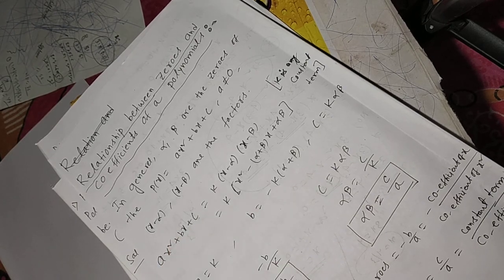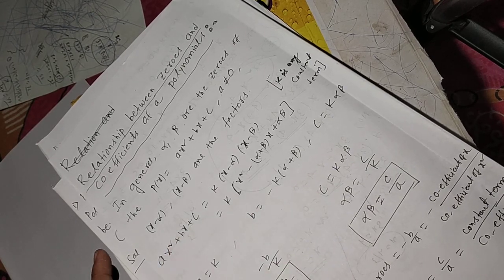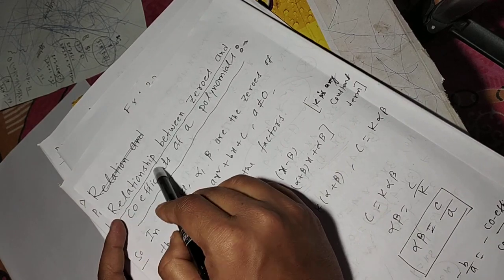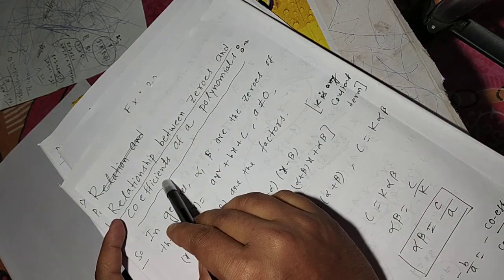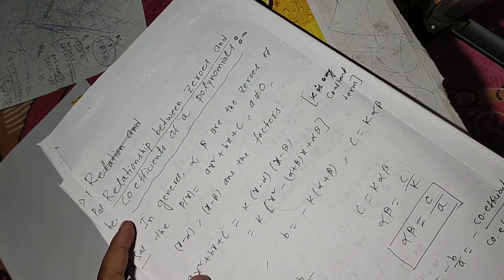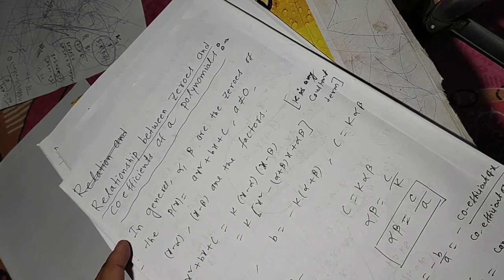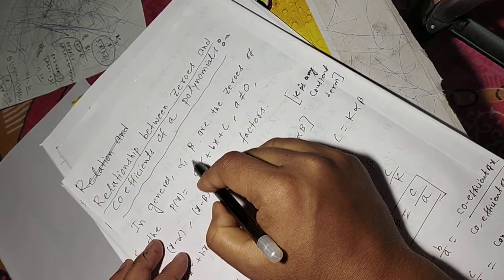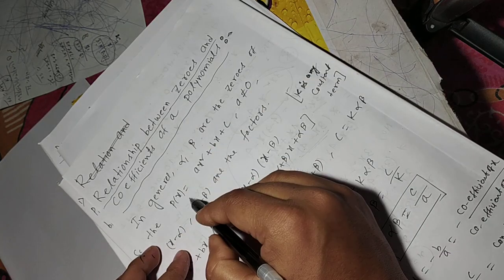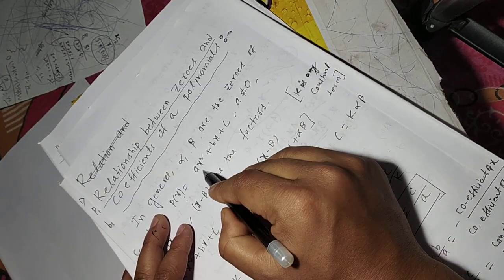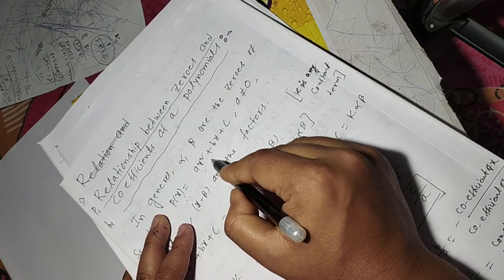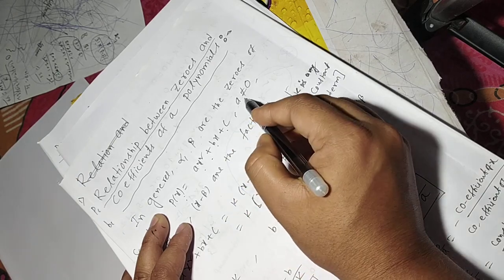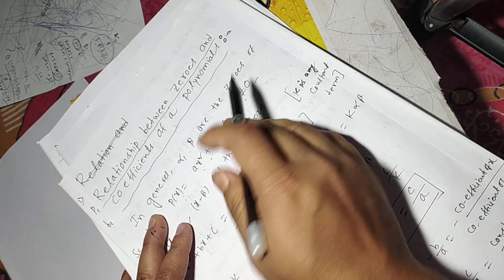Namaskar students. My next topic is the relationship between zeros and coefficients of a polynomial. In general, alpha and beta are the zeros of the polynomial P of x equals ax squared plus bx plus c, where a is not equal to zero and a, b, c are real.